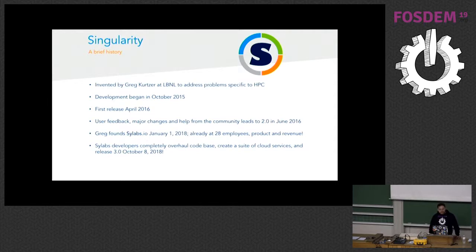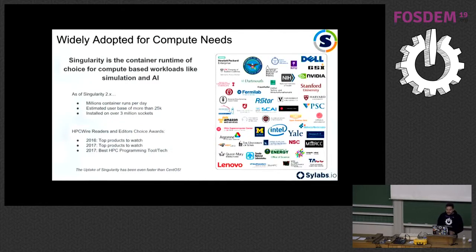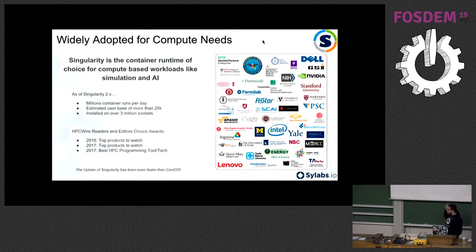This talk is going to be focused around our release 3.0, released in October last year, which comes with a lot of new features, more stability for users, and a new language update so open source contributors can jump in more easily than before 3.0. A quick thank you to all the open source supporters for Singularity. Last year we won three HPC Wire Users and Editor's Choice Awards at Supercomputing, and we know that it's thanks to all you guys.